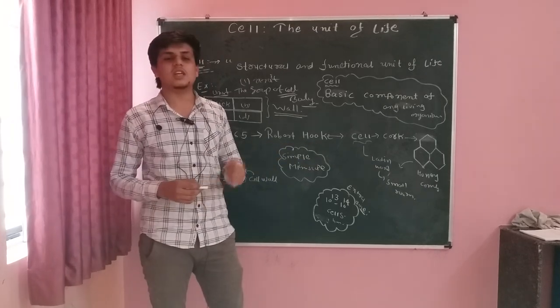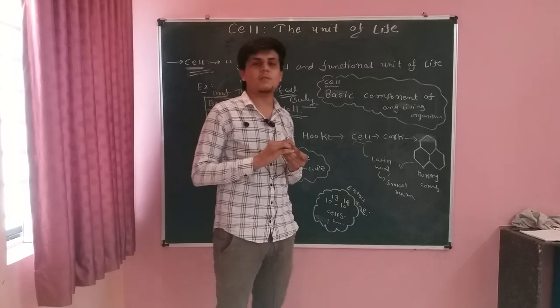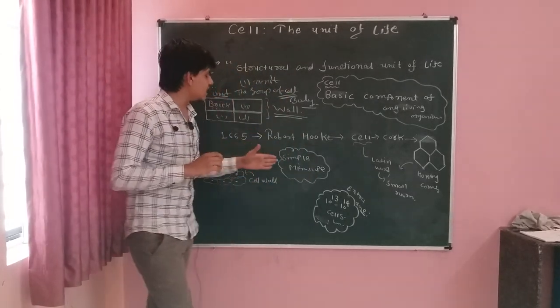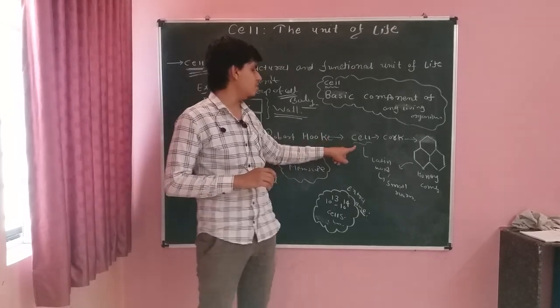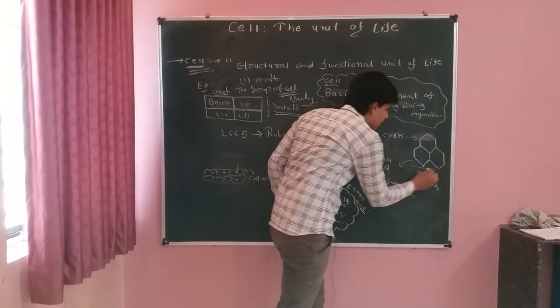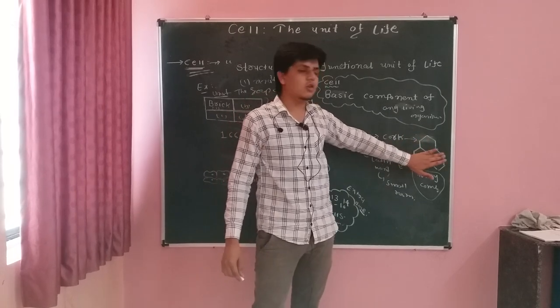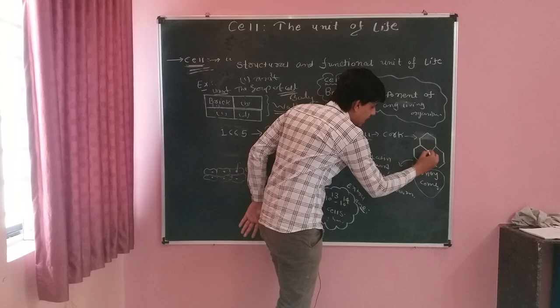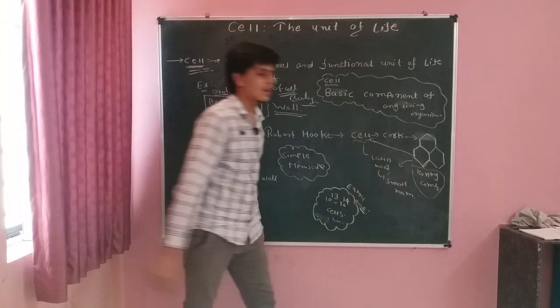Ab usne structure dekha to usne dekha kaise? Usne paas itni high technology to thi nahi. 1665 mein utni high technology ke microscope to milti nahi thae. So usne simple microscope ki help se, usne cell observe kiya, wo bhi cork mein se. Or uska structure tha ek honeycomb jaisa. Kaisa? Ek honeycomb jaisa. So honeycomb ka structure aisa hota hai. Usne yeh chhote chhote, joh yeh hota hai, usne naam de diya. Kya naam de diya? Usne naam de diya cell.